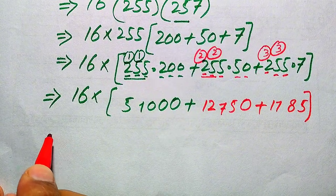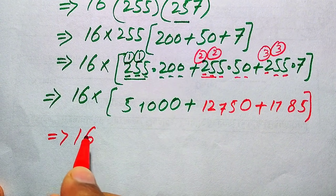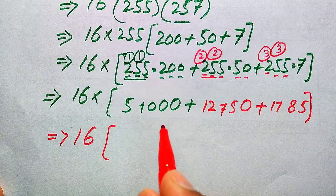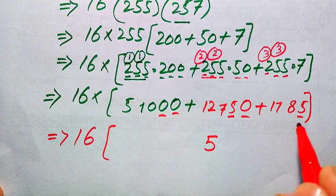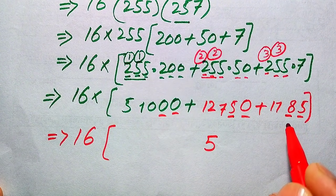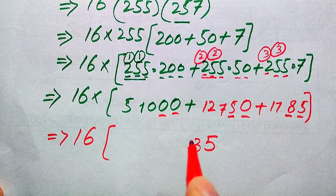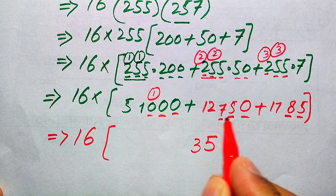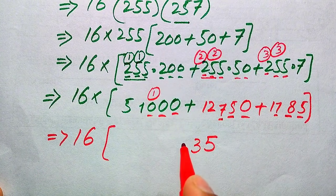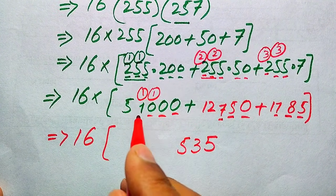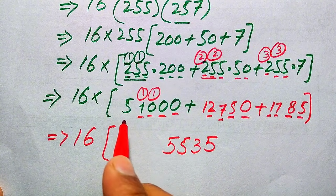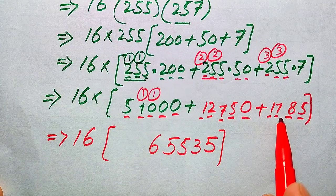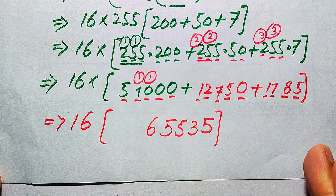In the next step we sum all of these values, and the resulting answer is multiplied by 16. Adding 51,000 plus 12,750 plus 1,785: we get 5 in ones, then 0 plus 5 plus 8 is 13, write 3 carry 1; 0 plus 7 plus 7 plus 1 is 15, write 5 carry 1; 1 plus 2 plus 1 is 4, then 5 plus 1 is 6. The sum is 65,535.